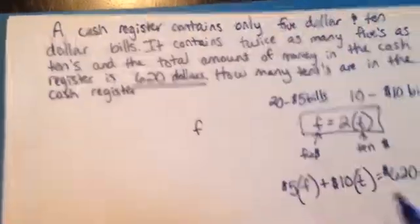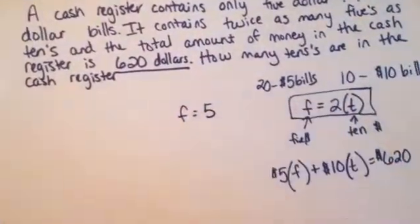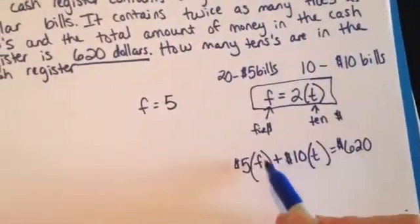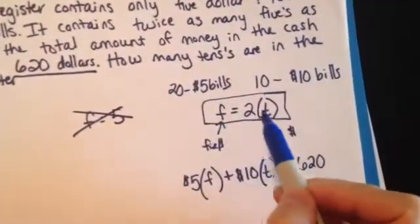So, just like if I said, solve this equation when F equals, let's say, 5, you could just plug in 5 for F and replace that. Instead of saying that, I'm telling you that F equals 2T.